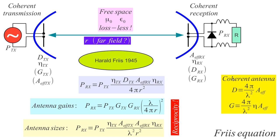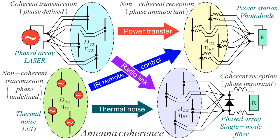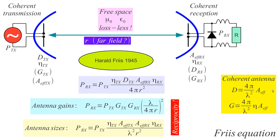With coherent antennas, phases are important. If I have a coherent receiving antenna of defined area, it will also have some directivity. For a coherent transmitting antenna, directivity comes only from the size of the antenna — the larger the antenna, the higher the directivity. So there is a relationship for coherent antennas between directivity and area: D = 4π/λ² × A_eff. This is only valid for coherent antennas. For non-coherent antennas, directivity and area are two independent quantities.